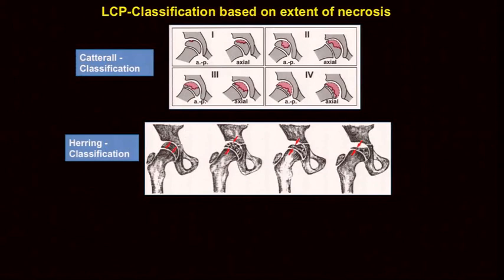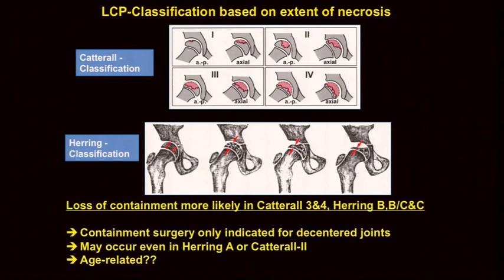We use two classifications, CATRAL and HERRING. Going through all the cases, it is more likely that in the severe cases you have a loss of containment, but you can also have this in HERRING-A and even in CATRAL-II cases. And there is, of course, an age-related situation, but it's not always age-related.